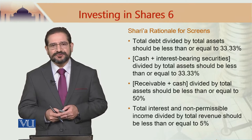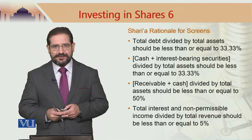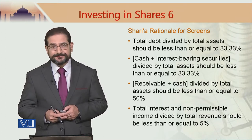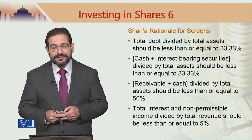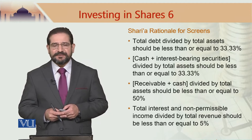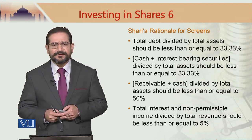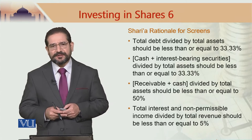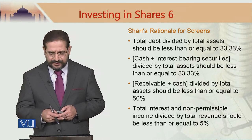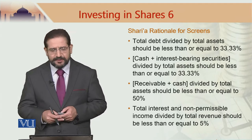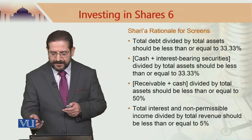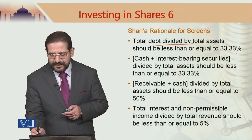In case of the S&P Dow Jones methodology, the first ratio is the debt activity ratio: total debt divided by market capitalization should not exceed 33%. Then cash plus interest bearing securities divided by market cap should not exceed 33%. Then receivables divided by market cap should not exceed 33% or 49% depending on which methodology we are referring to. Now, let me use this methodology which is from MSCI or FTSE, and give a sharia rationale for picking up these ratios and the numbers.